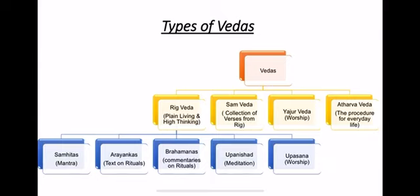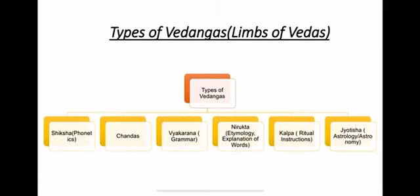Rig Veda is divided into five parts: first, Samhitas — also called mantras; second, Aranyakas — texts on rituals; third, Brahmanas; fourth, Upanishad — which we hear about a lot and will study further; and fifth, Upasana — which means worship. These are the five further divisions of Rig Veda.